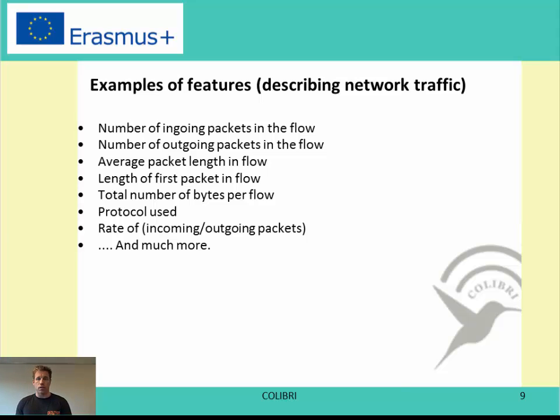Examples of features to describe network traffic include: number of ingoing packets in a flow, number of outgoing packets, average packet length, length of the first packet, total bytes per flow, the protocol used, and the rate of incoming versus outgoing packets — and much more. These features are used to describe the flows or even a collection of flows, and this is the key behind the next step: machine learning.